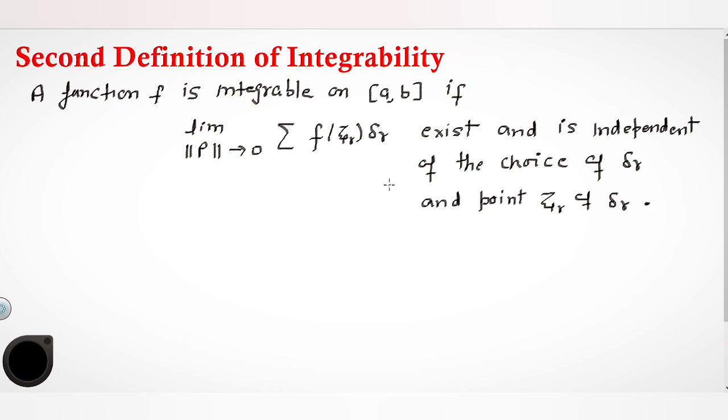So what do we say about this function? We can say norm of p tends to 0. Norm of p means the maximum length of interval. So when you write this, the limit n tends to infinite as norm of p tends to zero, summation r equals 1 to n, f of xir into delta r.